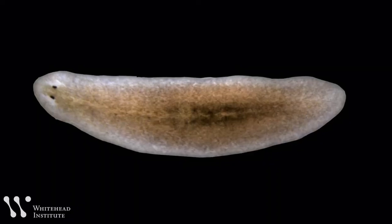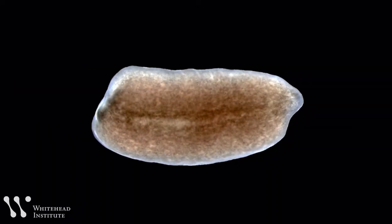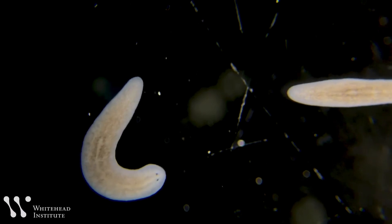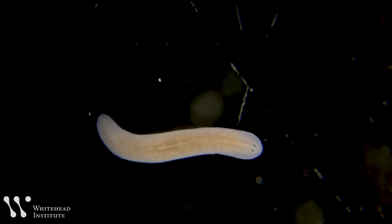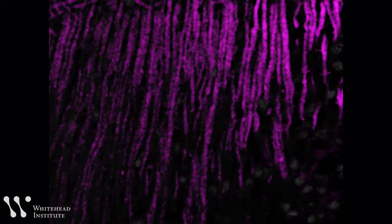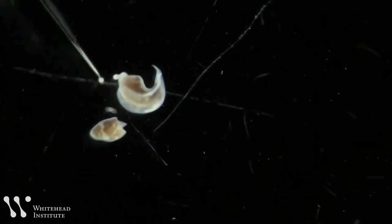That raises the question, of course, what happens when you cut off their heads? We know that within a week, the flatworms grow new, usable heads they can eat with and everything. But presumably, if you have a brain, that's where your memories are. So scientists have been trying to figure out what happens when the flatworms lose and then regrow their brains.